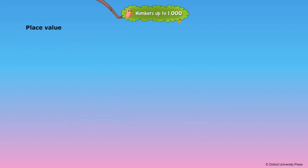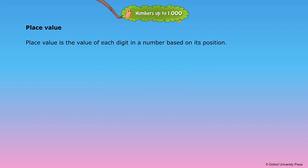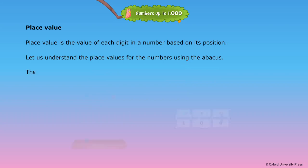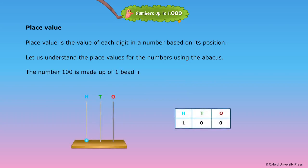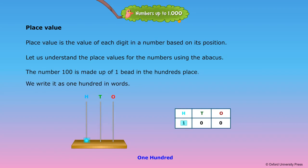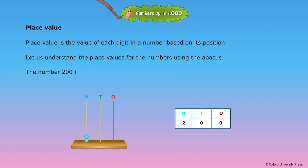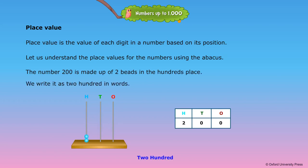Place value is the value of each digit in a number based on its position. Let us understand place values using the abacus. The number one hundred is made up of one bead in the hundreds place — we write it as one hundred in words. The number two hundred is made up of two beads in the hundreds place — we write it as two hundred in words.